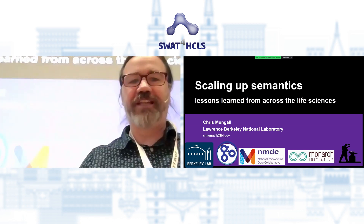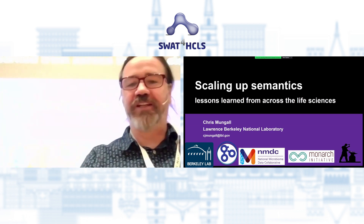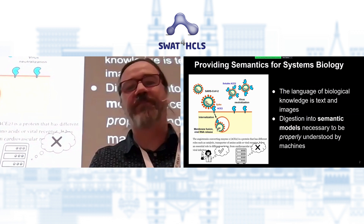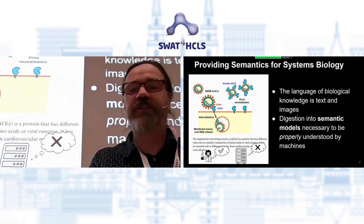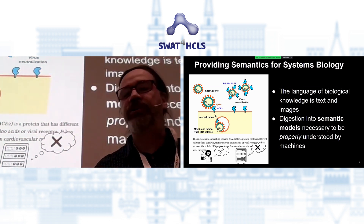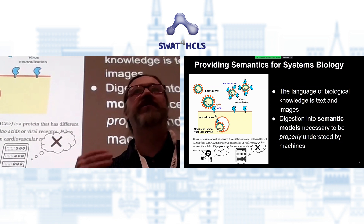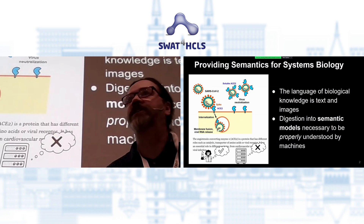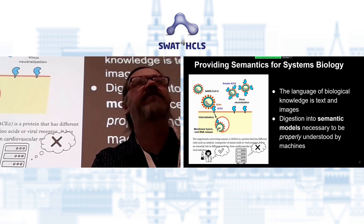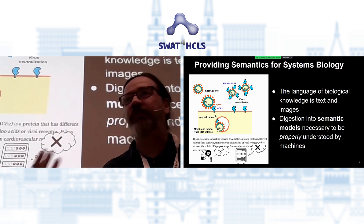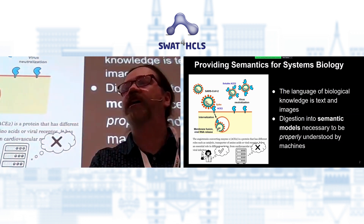I'm going to be talking about scaling up semantics — lessons learned from the life sciences — from my perspective on a number of different projects that make use of different ontologies. In the life sciences, we're generating more and more data and more and more knowledge. We want to make it accessible to machines so they can help us interpret scientific data, make new hypotheses, discover new ways to reposition drugs to treat diseases, and even understand how microbial life underneath the earth is contributing to global biogeochemical cycles.